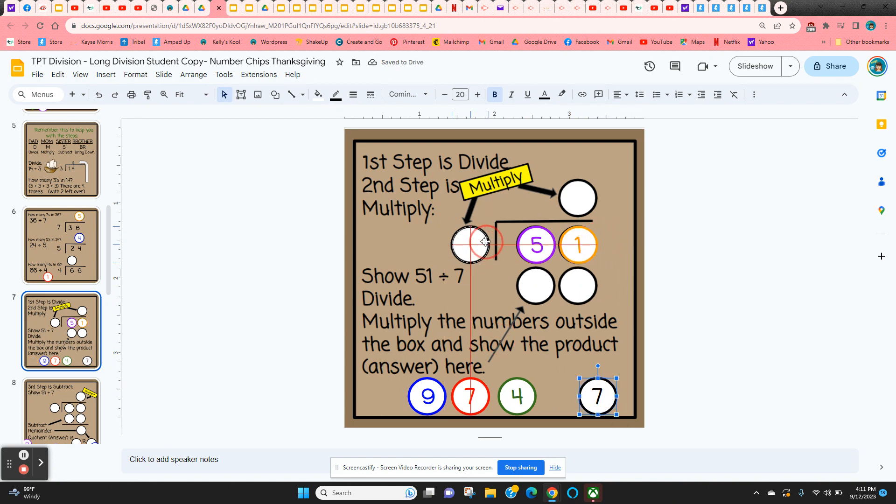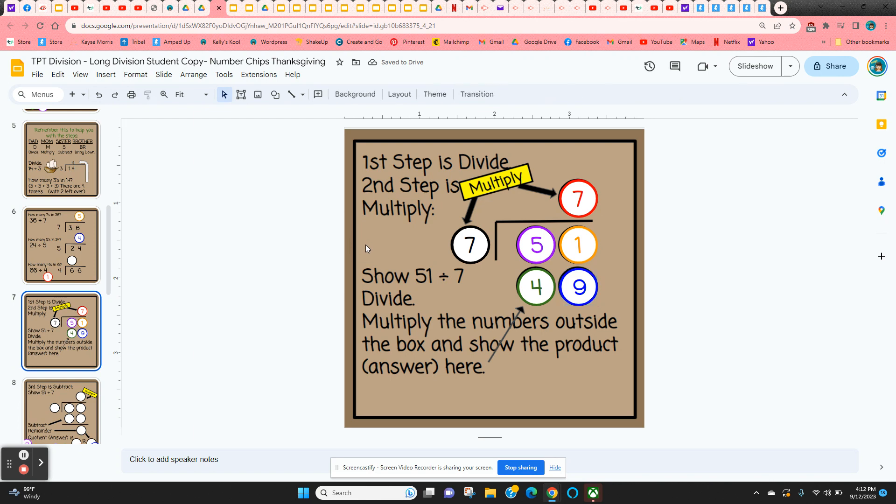And then they're going to divide. So that's the first step. 7 goes into 51 seven times. And then the next step is to multiply. So we're going to multiply these numbers outside the box. 7 times 7. And that will give us 49, which goes right underneath the 51. Okay, so they've just done the first and second steps.